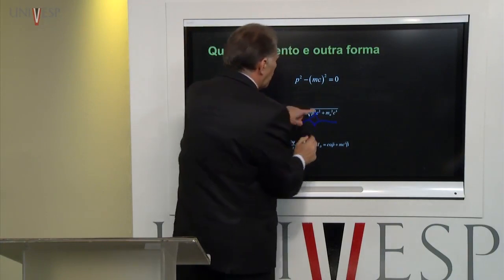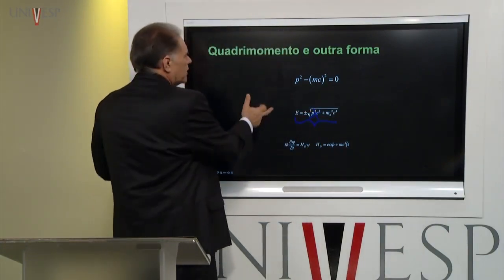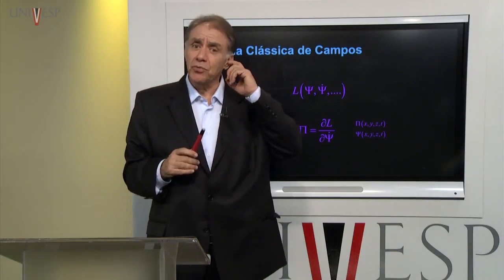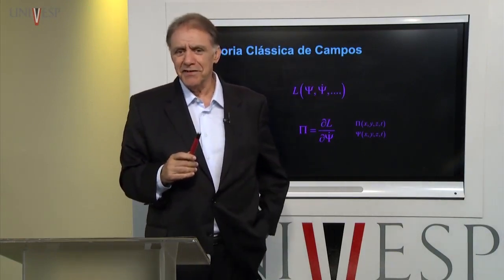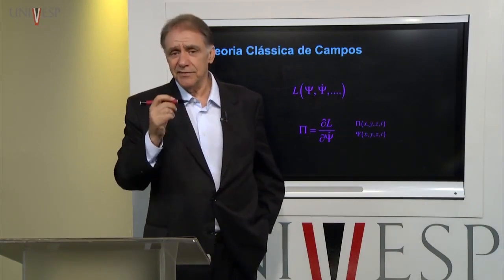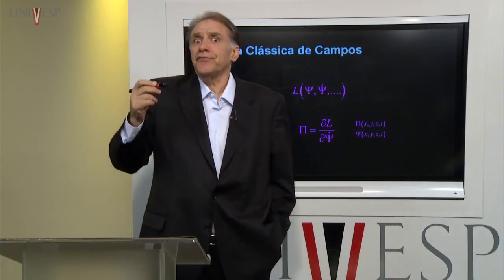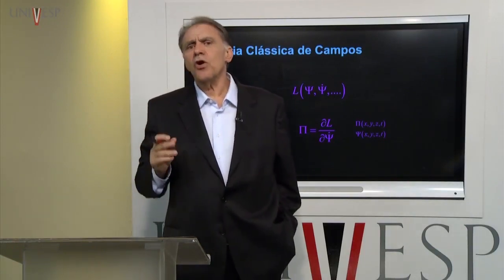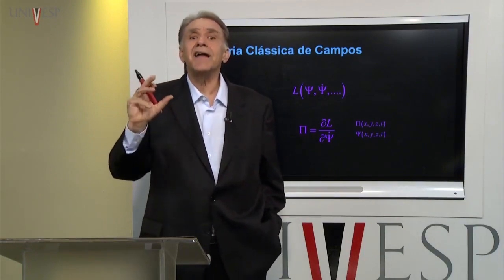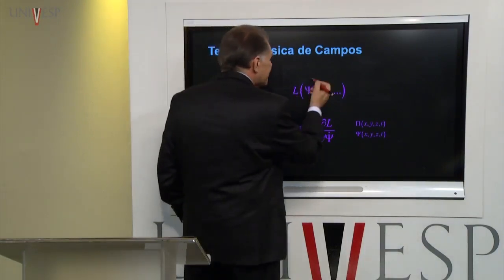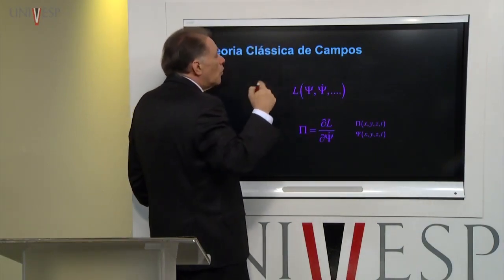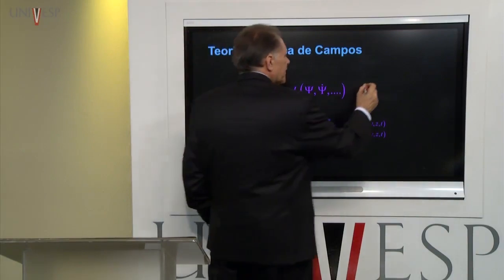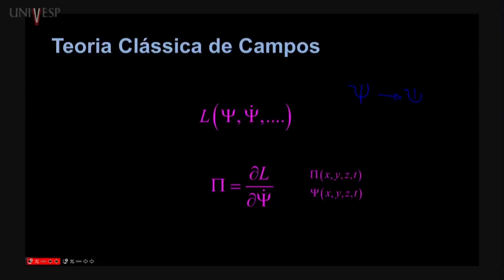Se P igual a zero, E igual a Mc², como sabemos. O fato é que essa é uma teoria belíssima. Mas a gente acabou não usando muito a equação de Dirac na forma de um campo clássico, de uma função de onda, porque Dirac estava escrevendo a equação para a função de onda relativística. Mas logo a coisa mudou, porque passou-se a interpretar esse psi como um campo da teoria quântica de campos — e depois você quantiza. Esse campo vai a um operador.